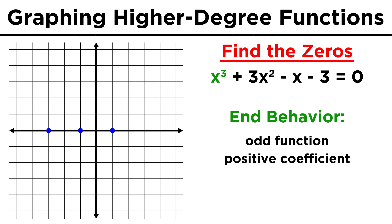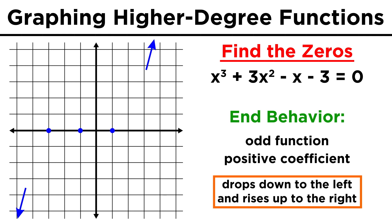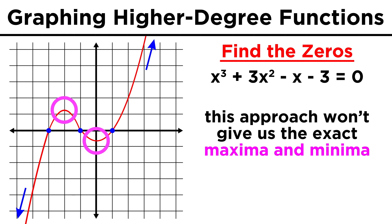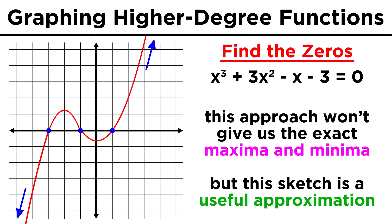Then we can get the end behavior by noticing that the leading term has an odd exponent and a positive coefficient of one, meaning that the function falls to the left and rises to the right. This is already enough information to sketch this function, because going left to right, it must rise up from negative infinity, cross the X axis at the first point, curve back down and cross again at the second, curve up and cross one more time, and then rise up towards positive infinity. It's true that we aren't getting the exact maxima and minima — that would require calculus — but the function must indeed look roughly like this, and sometimes that's all we need to know.